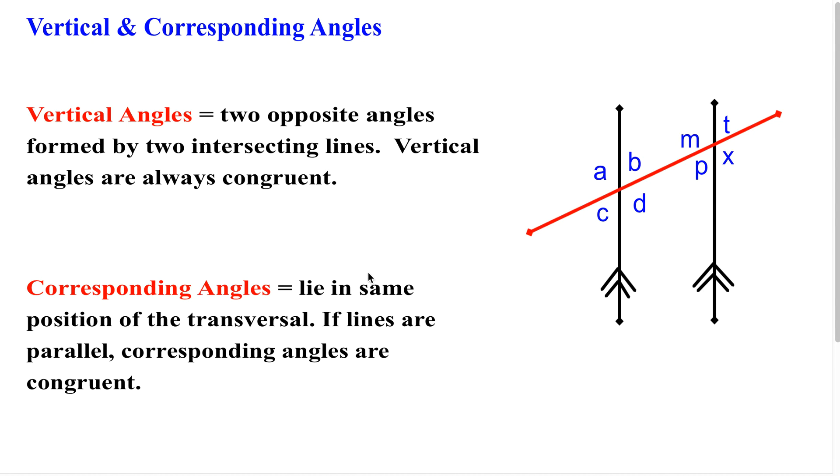So we're going to be looking at some angle relationships here next. We have two types of angles here. One we call vertical and the other we call corresponding angles.